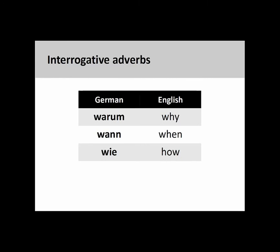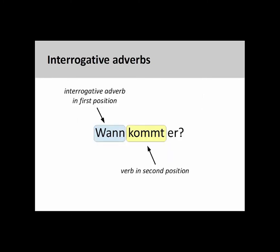Interrogative adverbs differ from interrogative pronouns in that they ask questions about the activity of a noun — the reasoning why an activity is performed, when it was performed, and the manner in which it was performed. Some interrogative adverbs are 'warum' (why), 'wann' (when), and 'wie' (how). In the sentence 'Wann kommt er?' (When is he coming?), the interrogative adverb 'wann' inquires about the time when an activity will be performed by the subject of the sentence.